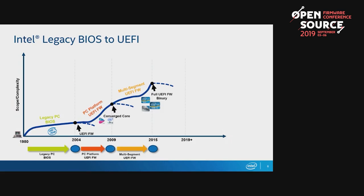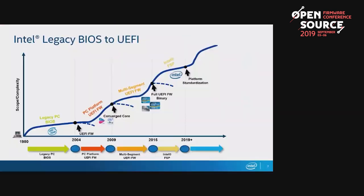We move all segments — from Atom to Xeon — onto this UEFI code base by 2015. At this point, we're getting everything on the core code. Around 2012, we started working on the FSP because people wanted to be able to wrap their silicon init code. Projects like CoreBoot and U-Boot needed a consistent way to do that, so we developed the Intel FSP to satisfy that silicon pillar. Now what we're left with naturally is the platform piece — standardizing the way we deliver firmware so you can use it reliably.